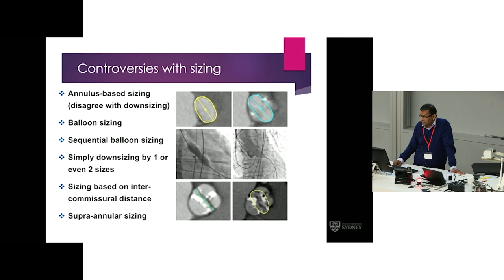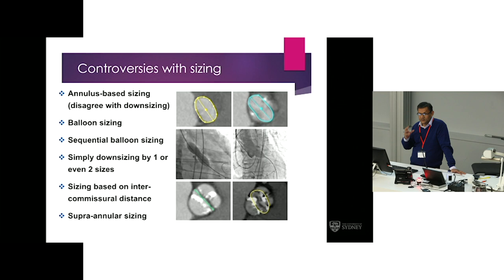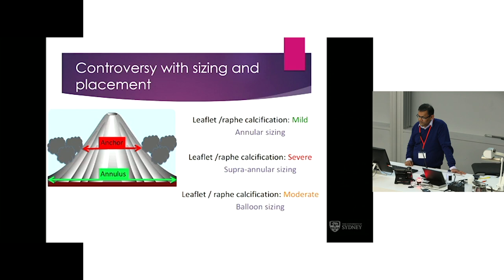There are some controversies on sizing, and I hope we have time for the panel to discuss this. Where do you actually size these valves — at the annulus? Do you use a balloon valvuloplasty with an aortogram to see you've got an adequate seal? Do you size the intercommissural distance, or do you look above? The issue really relates to your appreciation of the calcification and where it sits. Sizing supra-annularly provides the best seal, and I think this relates to the degree of calcification in the raphae and the valves.